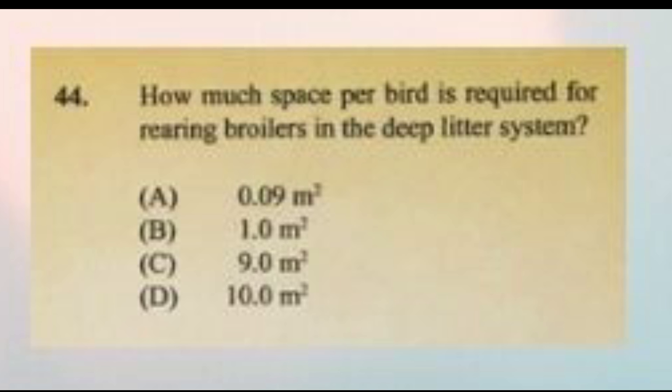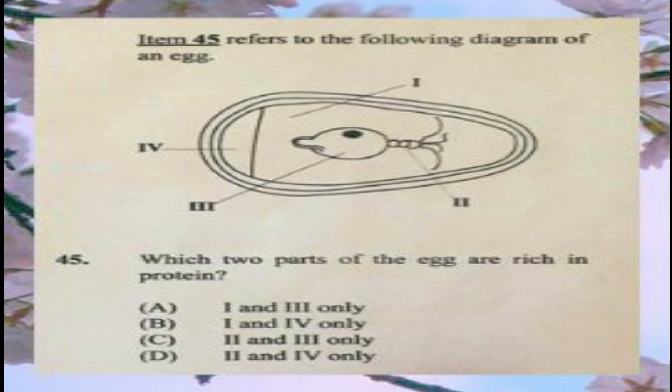One meter equals three feet, so 0.09 m² converts to approximately 0.968 square feet, which rounds to one square foot. Question forty-five refers to a diagram of an egg. Which two parts are rich in protein? A) one and three, B) one and four, C) two and three, D) two and four. The answer is A, one and three — the albumin (egg white) has protein and the yolk also contains a good amount of protein.